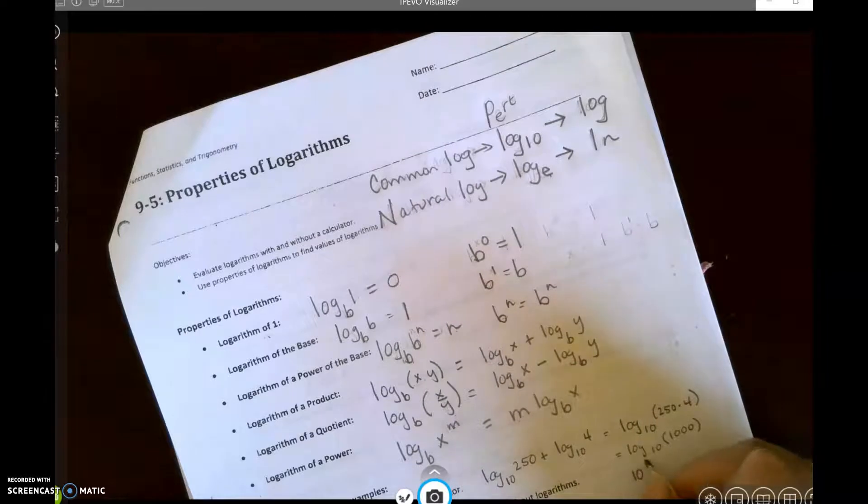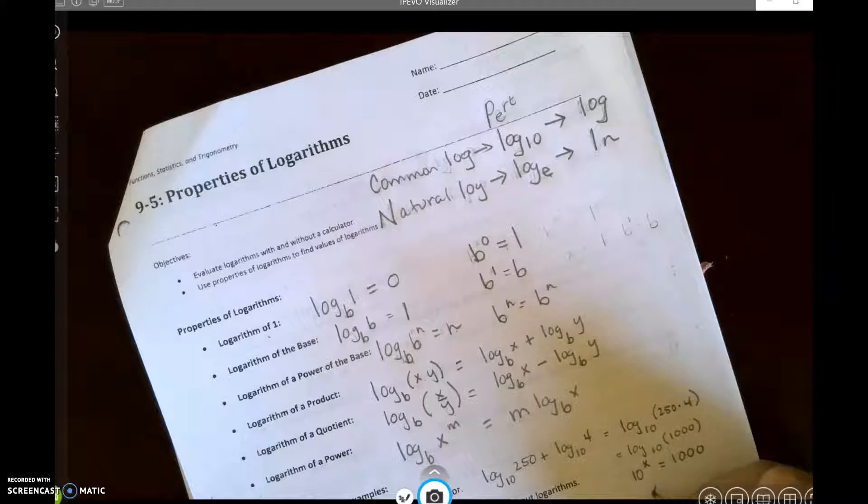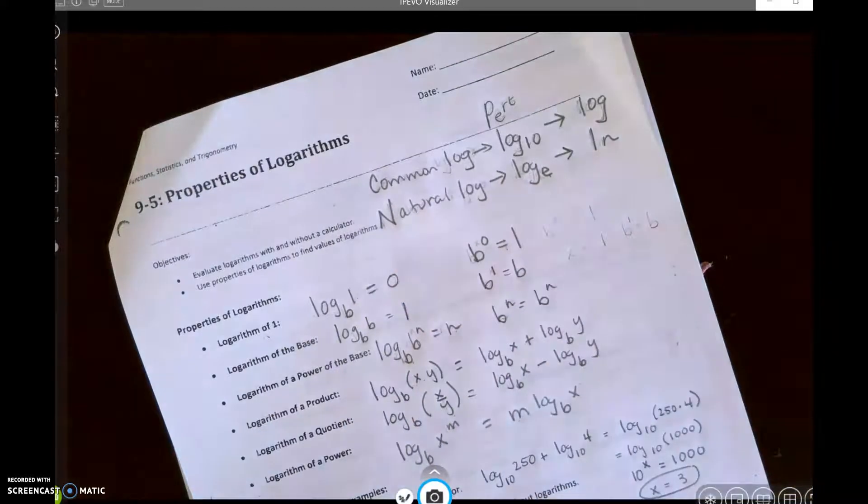So 10 to some power equals 1,000. So I know that x has to equal 3, because 10 to the third is 1,000.